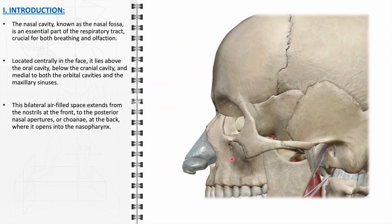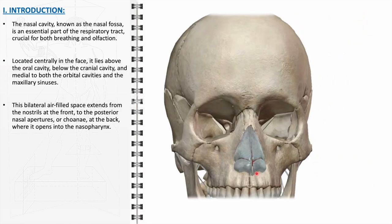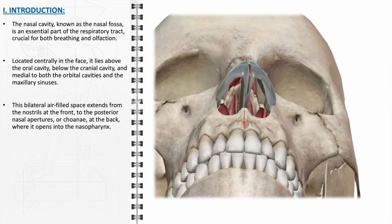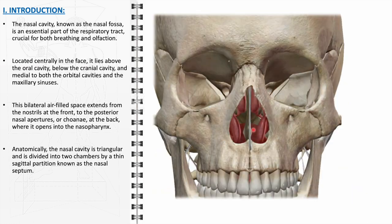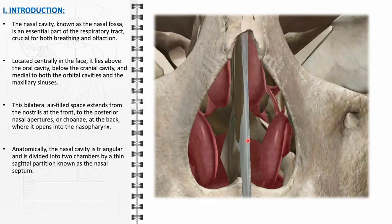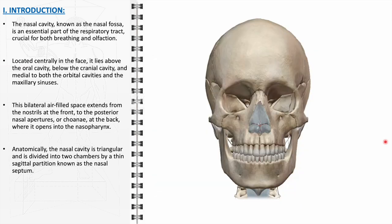Extending from the front nostrils to the posterior nasal apertures, or choanae, the nasal cavity serves as the primary airway for inhalation. At the back, it opens into the nasopharynx, linking the upper respiratory and digestive tracts. Its bilateral, air-filled structure is crucial for filtering, humidifying, and warming the air before it reaches the lungs. The cavity is anatomically triangular and divided into two separate chambers by the nasal septum, a thin sagittal partition. This division is crucial for maintaining balanced airflow and facilitating efficient nasal function.